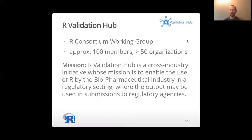The R Validation Hub has been in existence for around about two years. We are an R Consortium funded working group and over those two years we've grown to around about 100 members from 50 different organizations. We work within the pharmaceutical industry, including pharmaceutical companies, independents, contract research organizations, and regulatory bodies. Our mission is to enable the use of R in a regulatory setting, where output may be used in submissions to regulatory agencies.